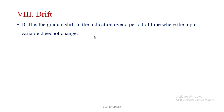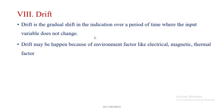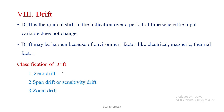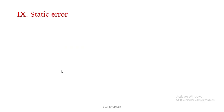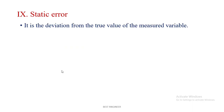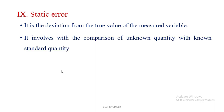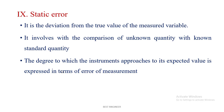Drift is the gradual shift in the indication over a period of time where the input variable does not change. Drift may occur due to environmental factors like electrical, magnetic, and thermal factors. Drift is further classified into three types: zero drift, span drift or sensitivity drift, and zonal drift. Static error is a deviation from the true value of the measured variable. It involves comparison of an unknown quantity with a known standard quantity, and the degree to which an instrument approaches its expected value is expressed in terms of the error of measurement.